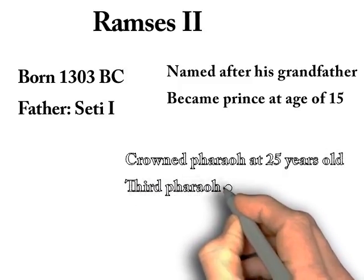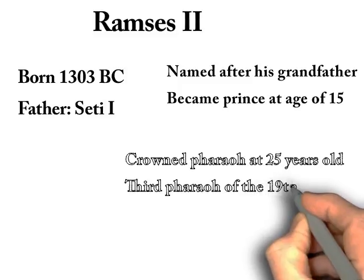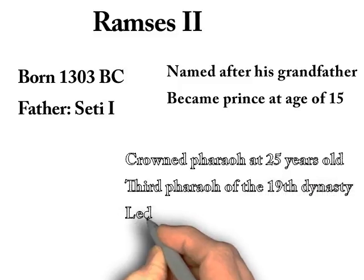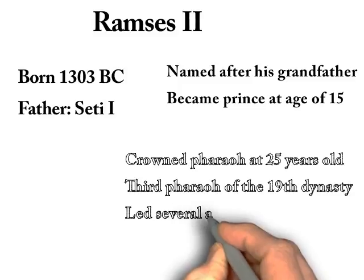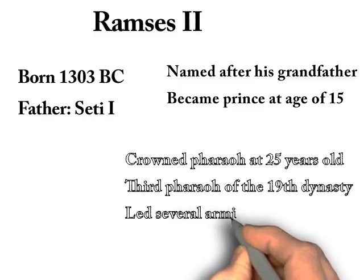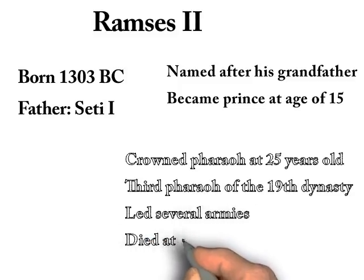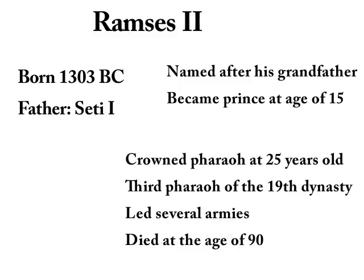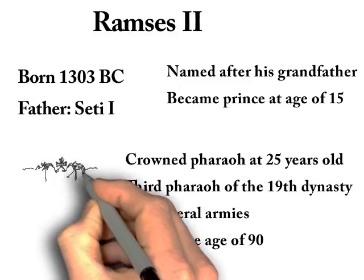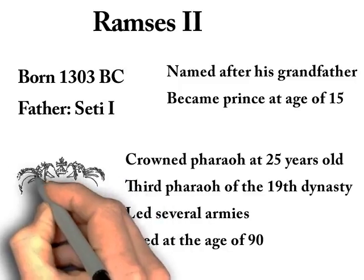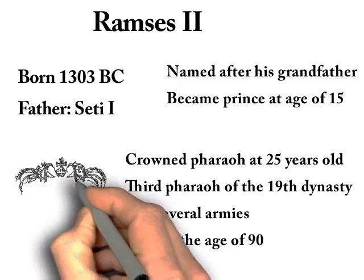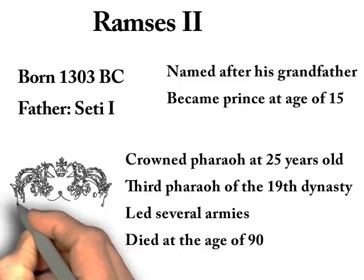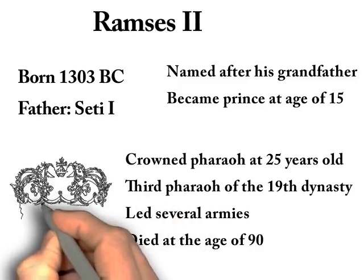He grew the Egyptian empire and secured its borders against attackers. One of the most famous battles during Ramses II's rule was the Battle of Kadesh. Ramses II died at around the age of 90. He was buried in the Valley of Kings, but his mummy was later moved to keep it hidden from thieves. Today, his mummy is found in the Egyptian Museum of Cairo.